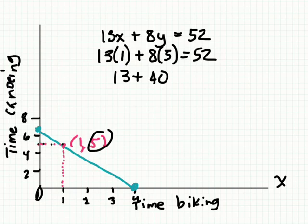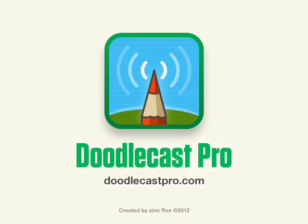So we must have read this point wrong. It's hard to see on this graph. You guys got to do it on your own graph. Use a ruler and check the points. This does not equal 52, so this point is actually not on the line. I misread it.